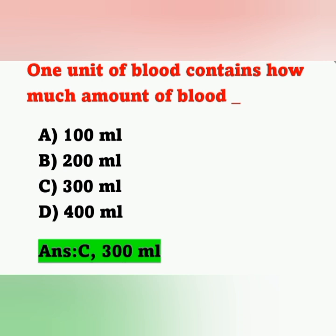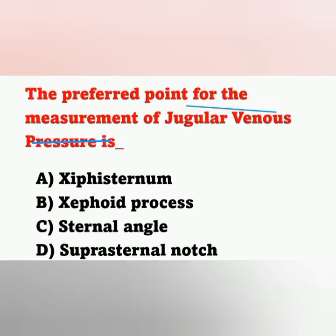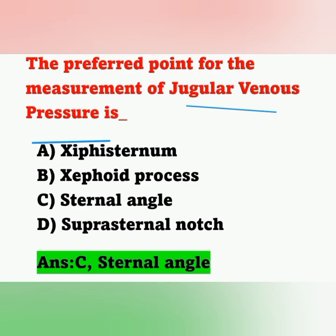Question 3: The preferred point for measurement of jugular venous pressure is — A) CV sternum, B) C4 process, C) sternal angle, D) suprasternal notch. The correct answer is option C, the sternal angle. The position used for measuring jugular venous pressure is the semi-Fowler's position.